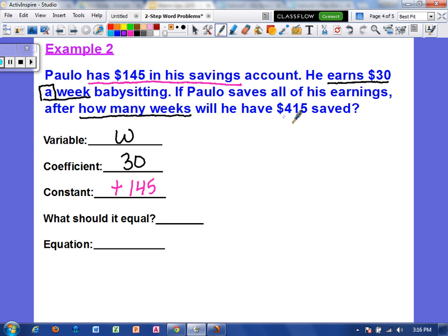So to write that as an equation it would be 30W + 145 = 415. So let's go ahead and solve that.